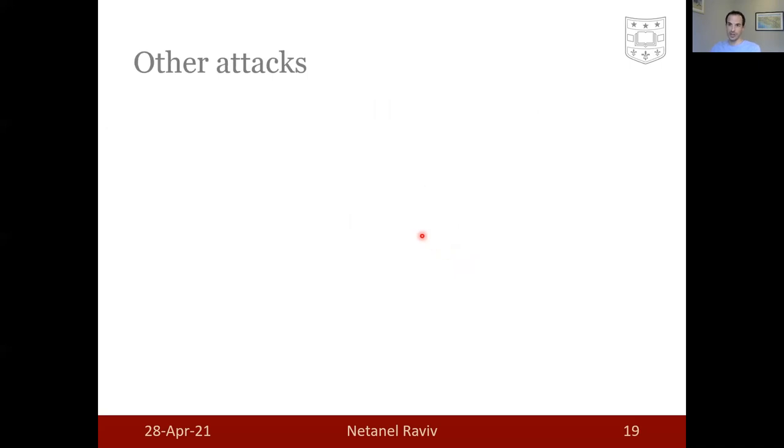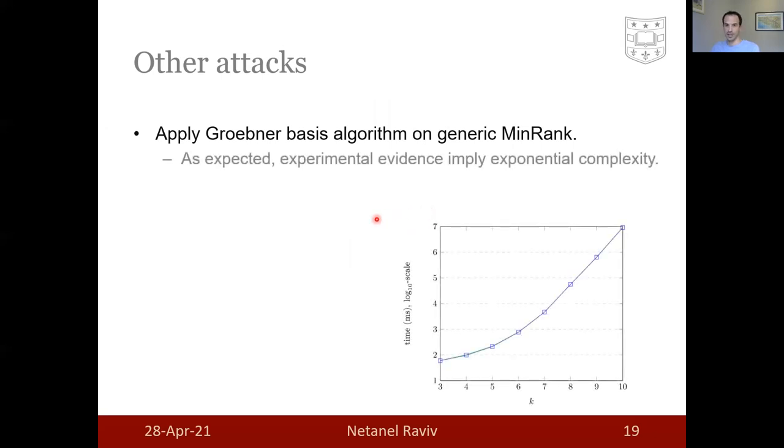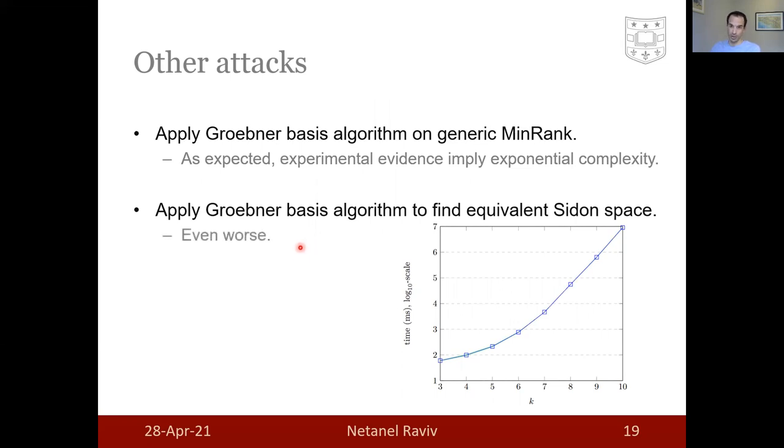Different attacks that we implemented, we tried to apply Gröbner-Basis algorithm on the generic min rank, and as expected, it was exponential. We also applied several Gröbner-Basis algorithms to find an equivalent Sidon space, which performed the worst out of all attacks. Our code is available on GitHub, if any of you is interested.